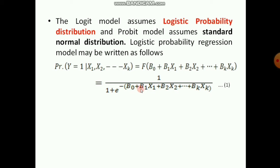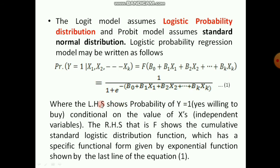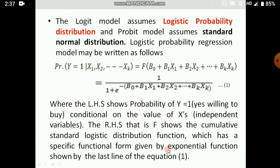The left-hand side shows the probability of y=1, meaning success — that is, the respondent is willing to buy — conditional on the values of x, the independent variables. The right-hand side, f, shows the cumulative standard logistic distribution function, which has a specific functional form given by the exponential function shown in equation 1.